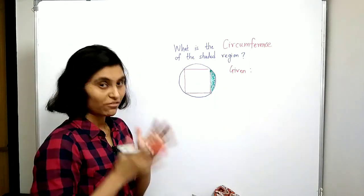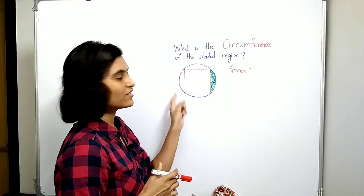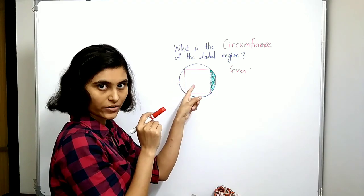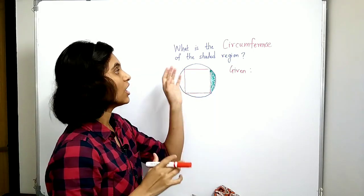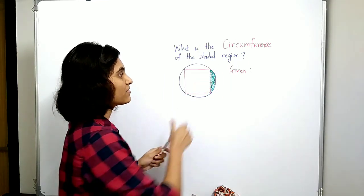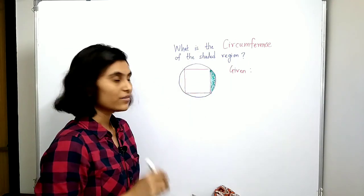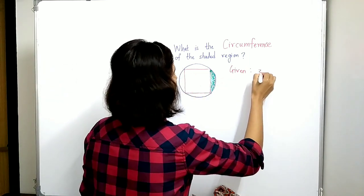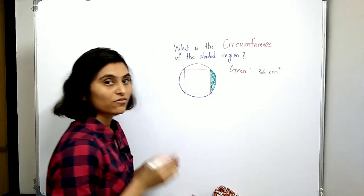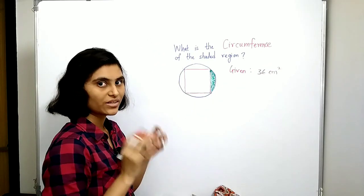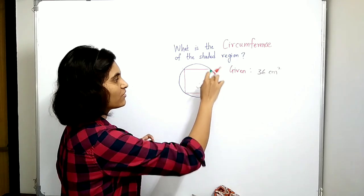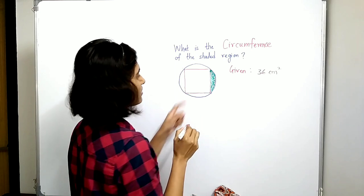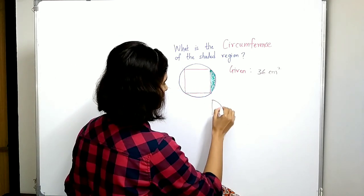Now let's solve this problem. Here we have a figure which contains a circle, and a square is inscribed in this circle. The question is: what is the circumference of this shaded region? We are given that the area of this square is 36 centimeter square. By using this information we just have to find the circumference of this shaded region. If you look at this carefully, the shaded region here is just a part of this square.